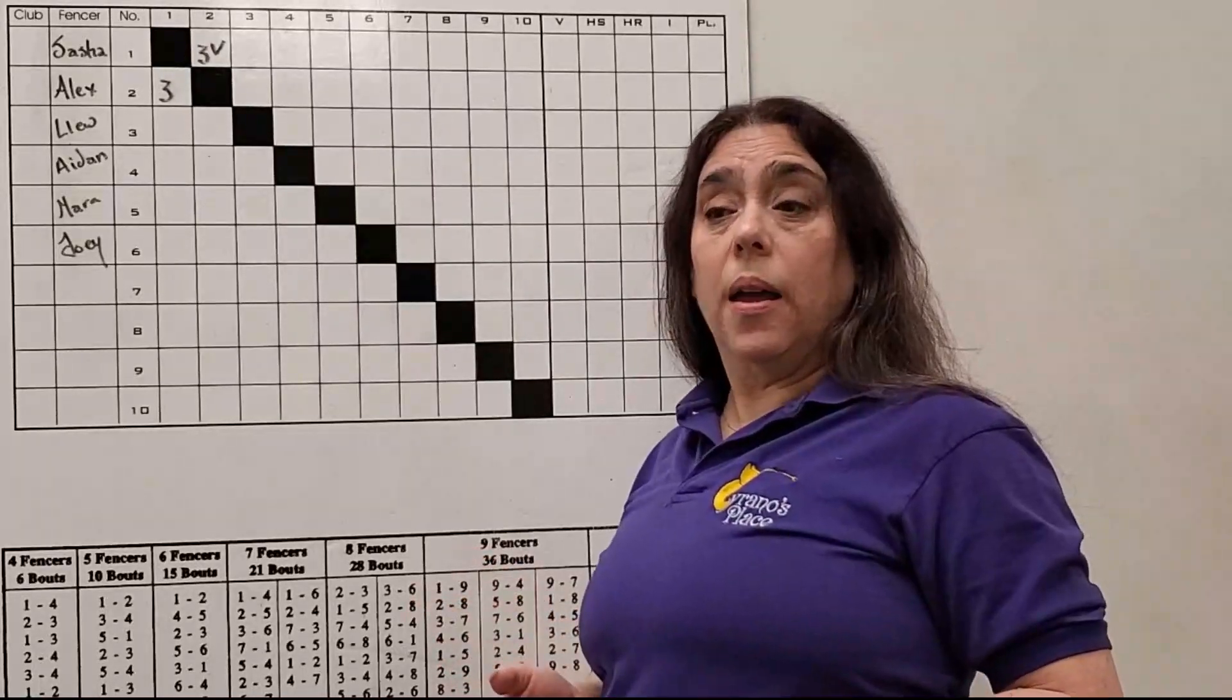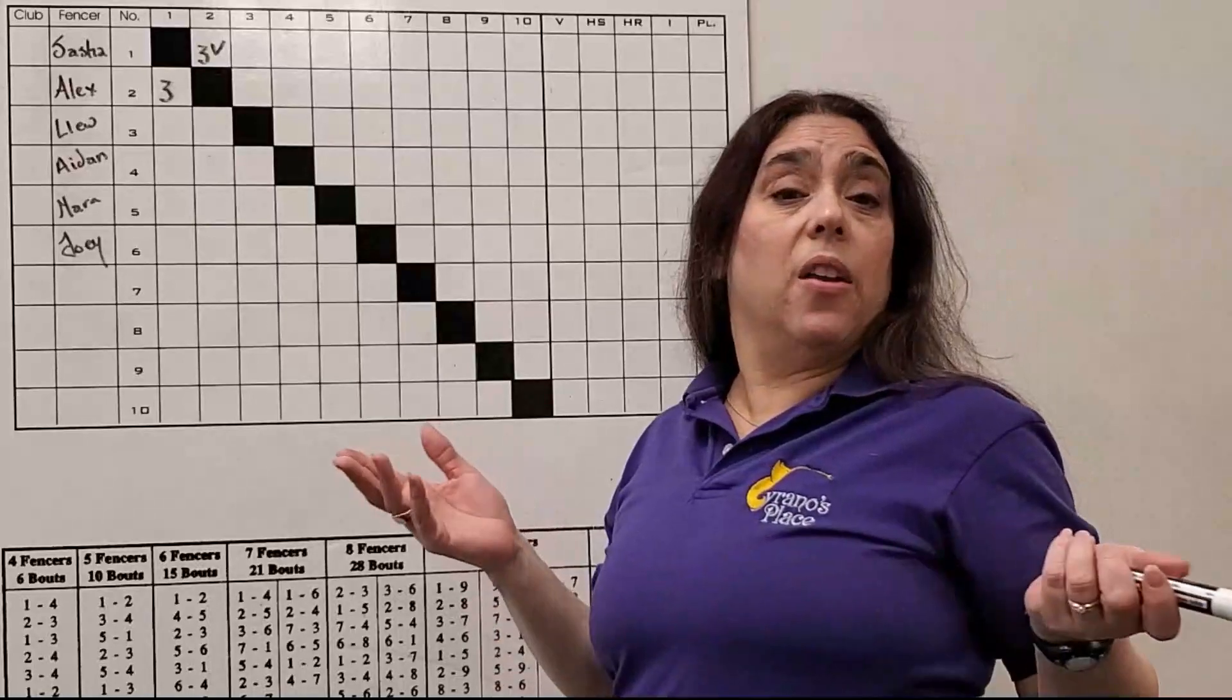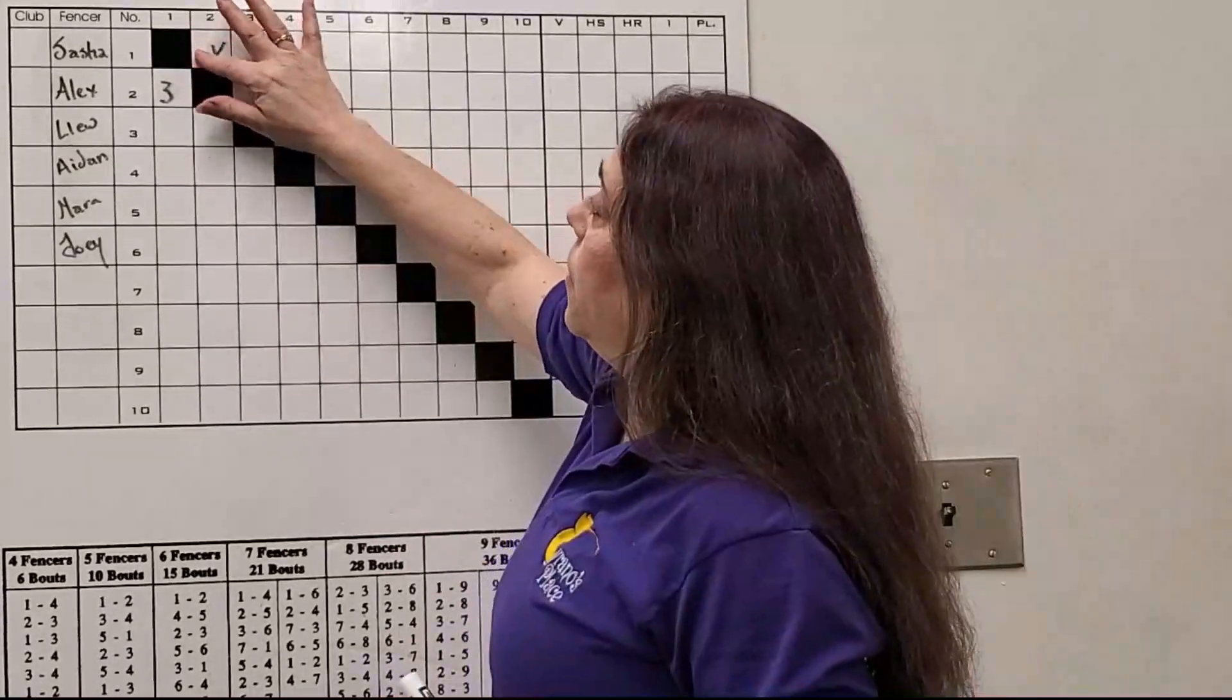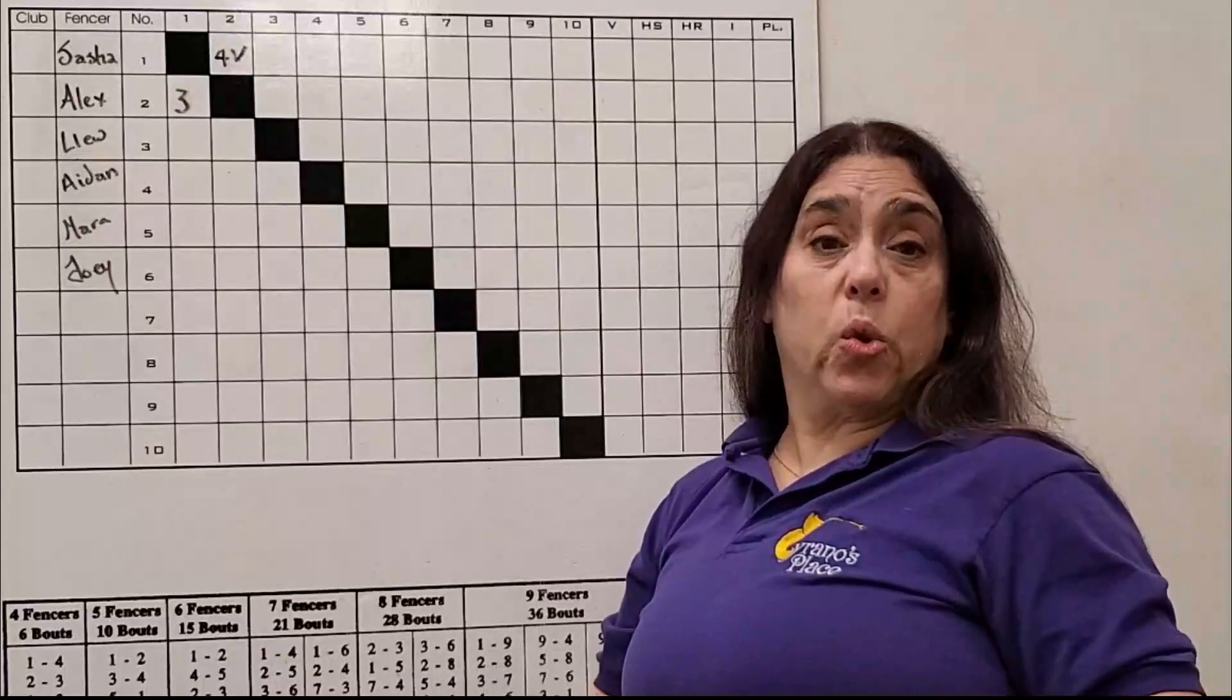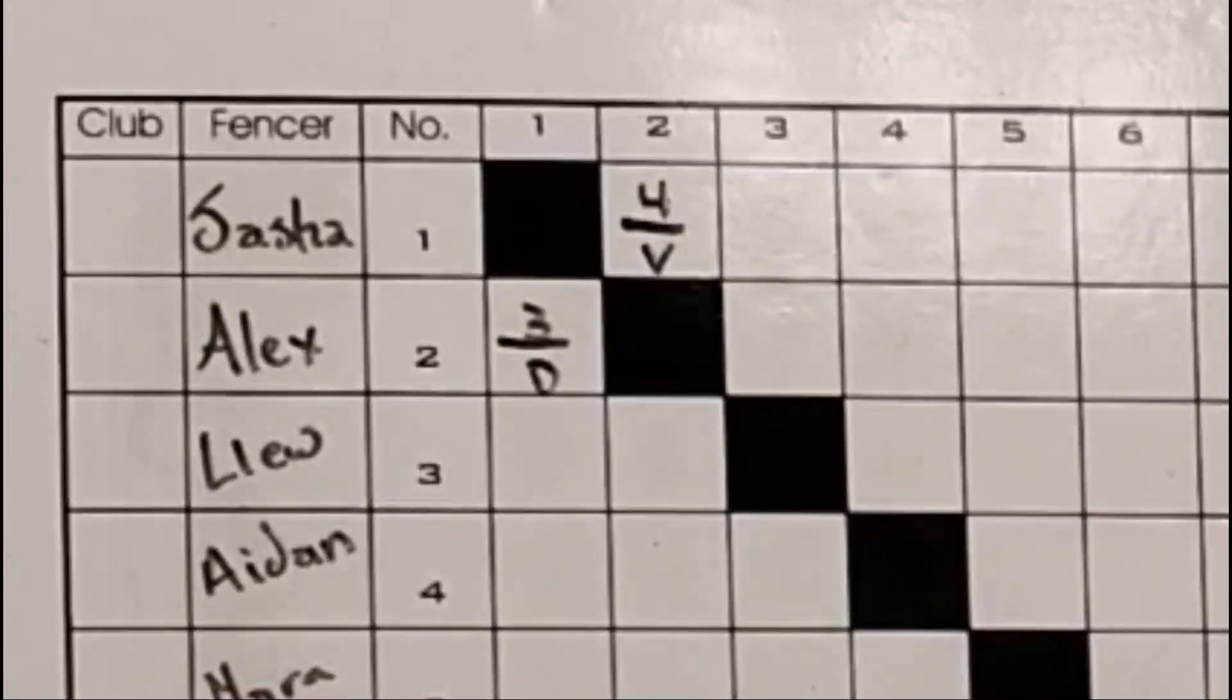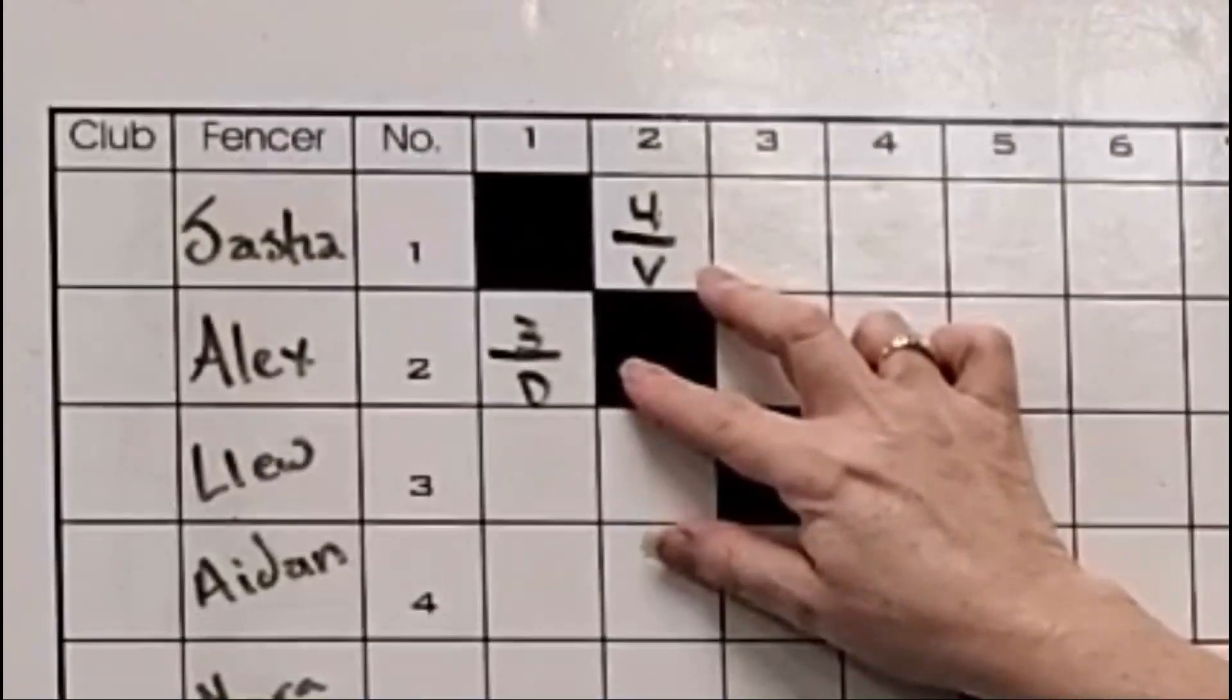Here we've got the score between Sasha and Alex as three to zero, but you'll notice we have a V next to the three. What happened? Time ran out, the score was tied, and with one minute overtime Sasha had priority and nobody scored, so Sasha won the bout. Another way we might write the score is by putting a hash mark dividing up the box.